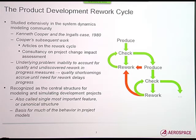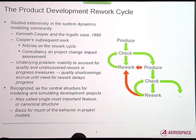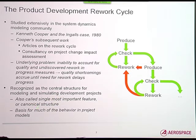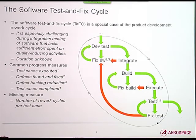He identified the underlying problem as an inability to account for quality and undiscovered rework in progress measures. We go along saying we've made this much progress, when in fact we really don't know because there's so much undiscovered rework. Over three decades of working with modeling projects, the system dynamics folks have come to call the rework cycle the most important feature — the canonical structure underlying modeling of products.